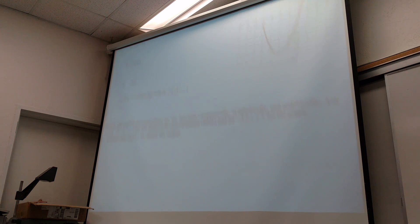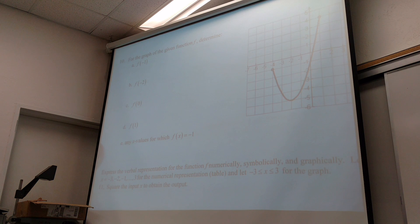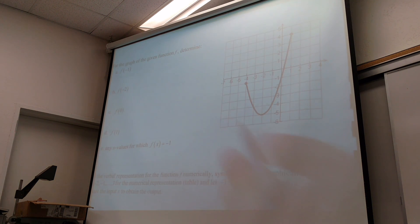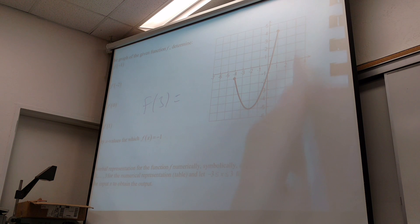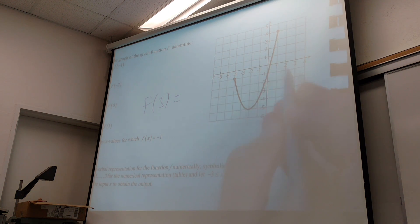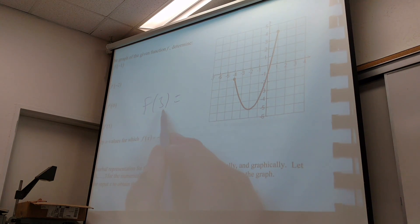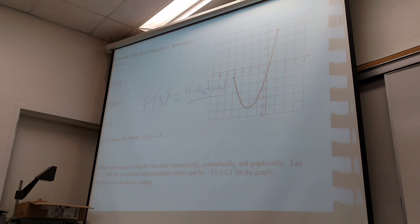What is F of 3? Is there anything there? No — so it's undefined. Where is this function defined? What's the domain? Negative 4 up to 1. Any question outside that domain is undefined — there are no defined points for those. So F of 3 would just be undefined. I can't remember if the homework does that to you, so I wanted to cover it here.